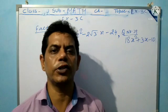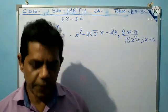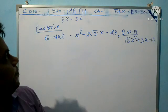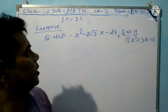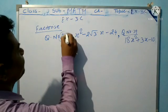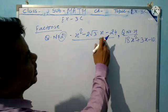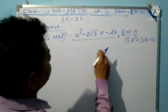In previous classes we also discussed the topic of factorization. Exercise 3C, question number 21: x² - 2√3x - 24 is to be factorized.